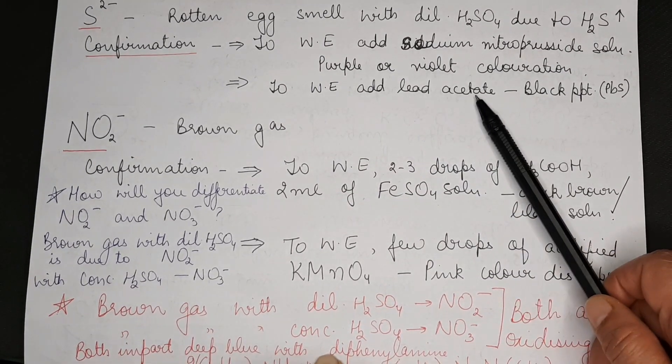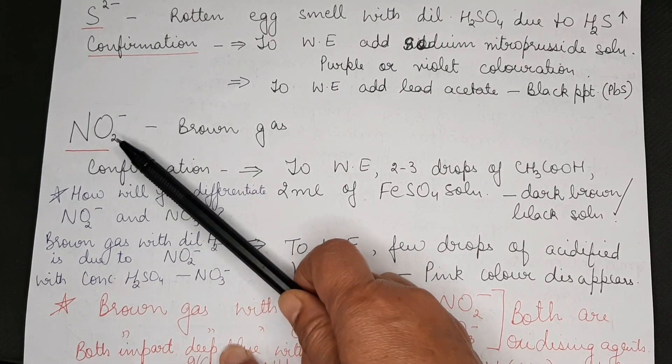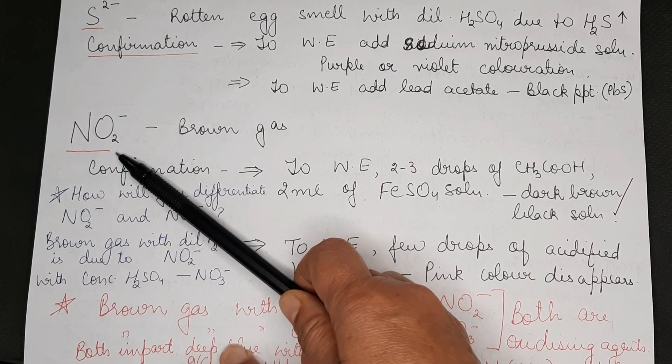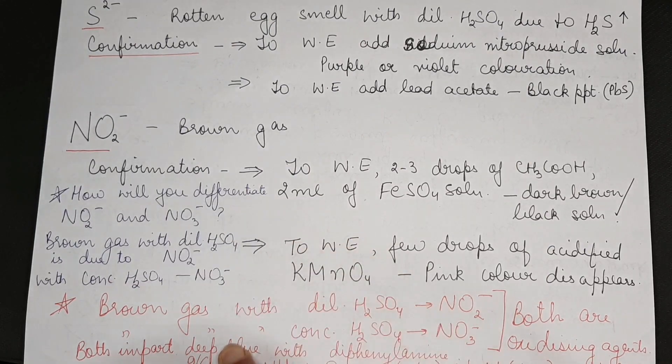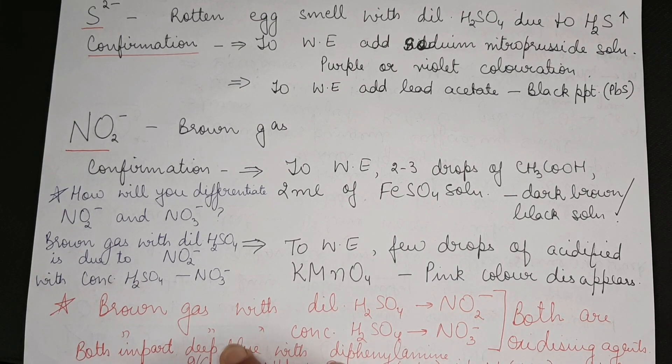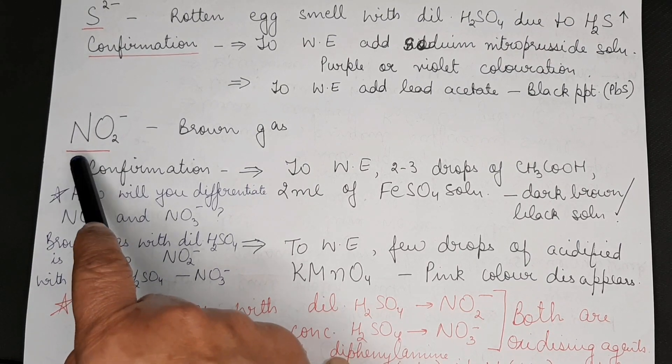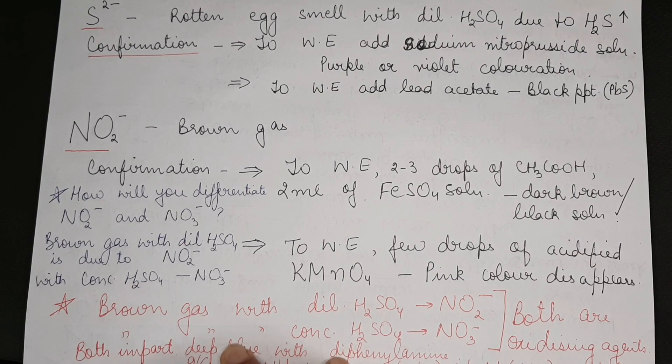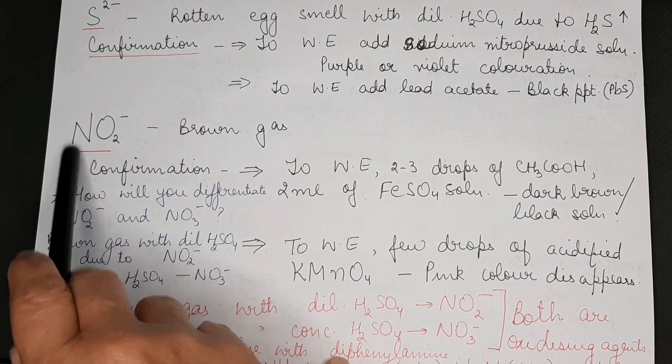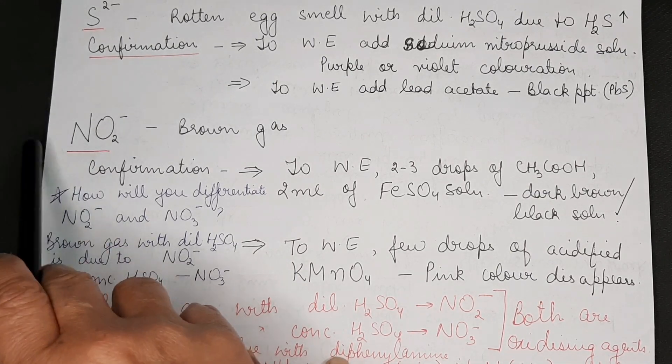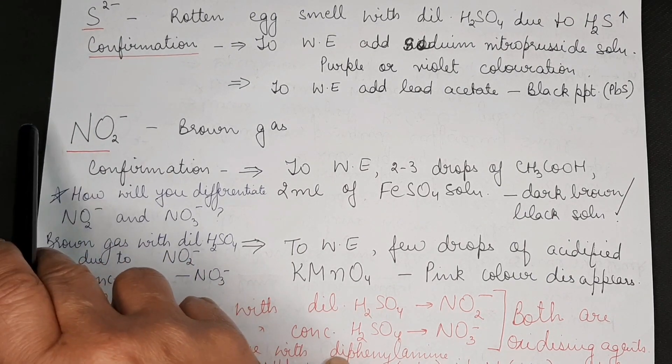Then we have nitrite ion. Nitrite and nitrate are very important two ions. What I've been observing over the last 25 years: children make a mistake in the formula of nitrite and nitrate. Please remember: nitrite -ite ions are always the lower oxidation state ions, and -ate ions are always the higher oxidation state ions. Nitrite ion has nitrogen in +3, and nitrate ion is NO3- with nitrogen in +5. Please remember the formula with clarity because I've seen children losing marks because of the formula.